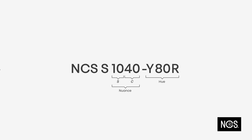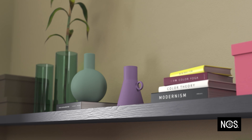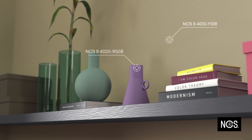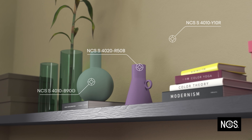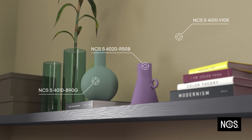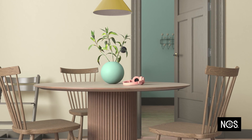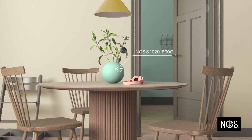After describing both the hue and the nuance of a color, we have now accurately and visually described our color flamingo as 1040 Y80R. This is the exact color name — the NCS notation.